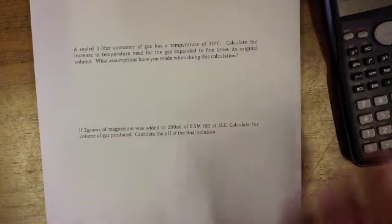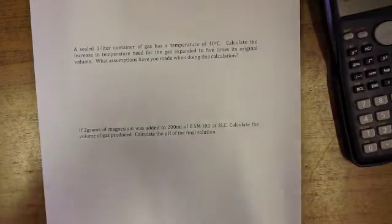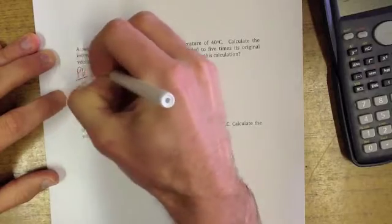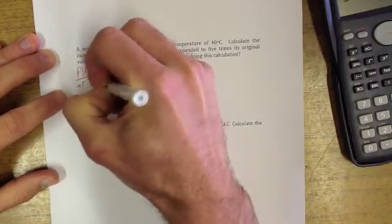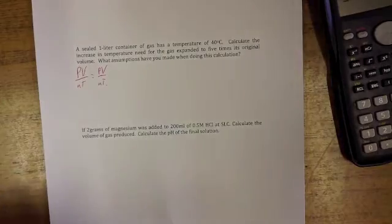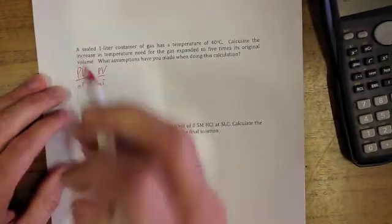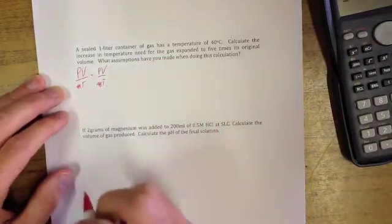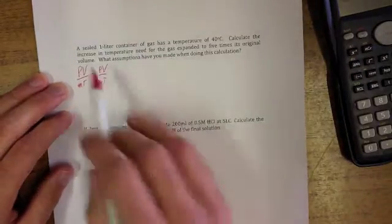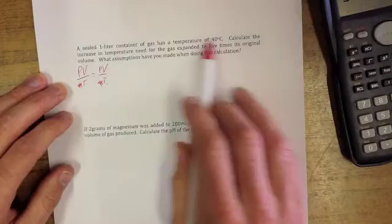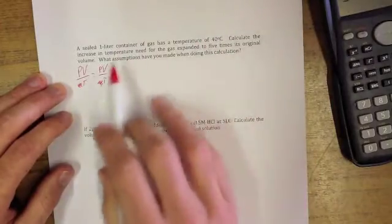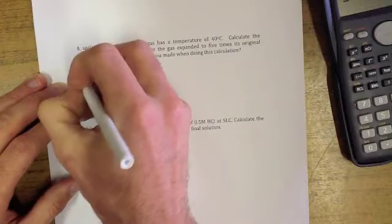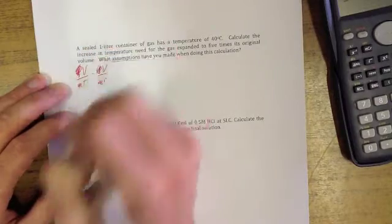Because we have a change in one of these values, we're going to use our combined gas law: PV over NT equals PV over NT. Now we look at what's constant. What's constant is a sealed container so we're not going to add any number of moles to it, so constant we just scrub out. We also haven't had any mention of pressure, so we need to assume that pressure is going to be constant as well and cross pressure out.